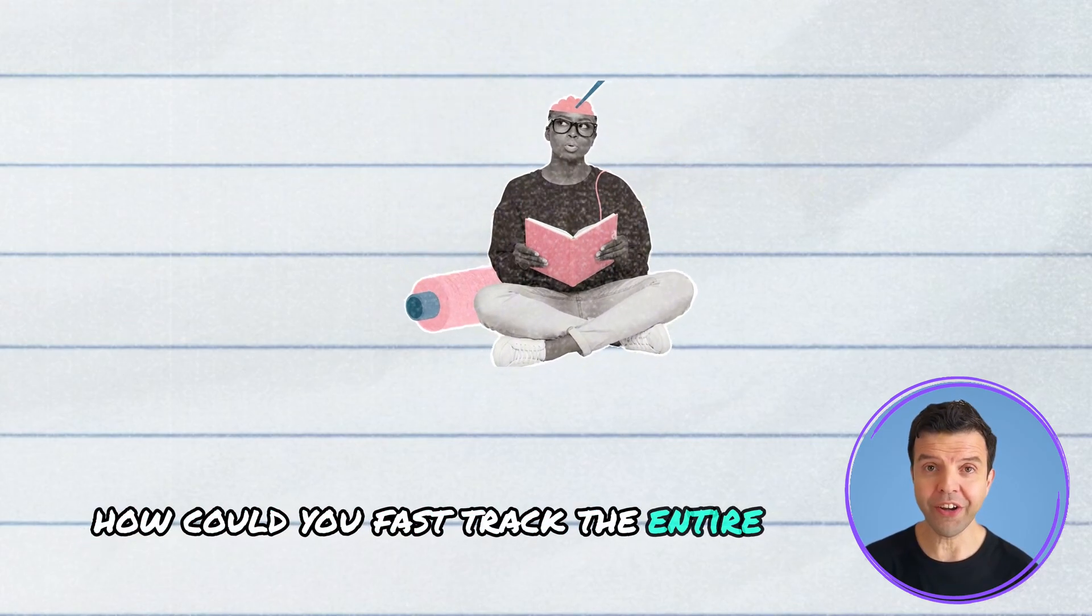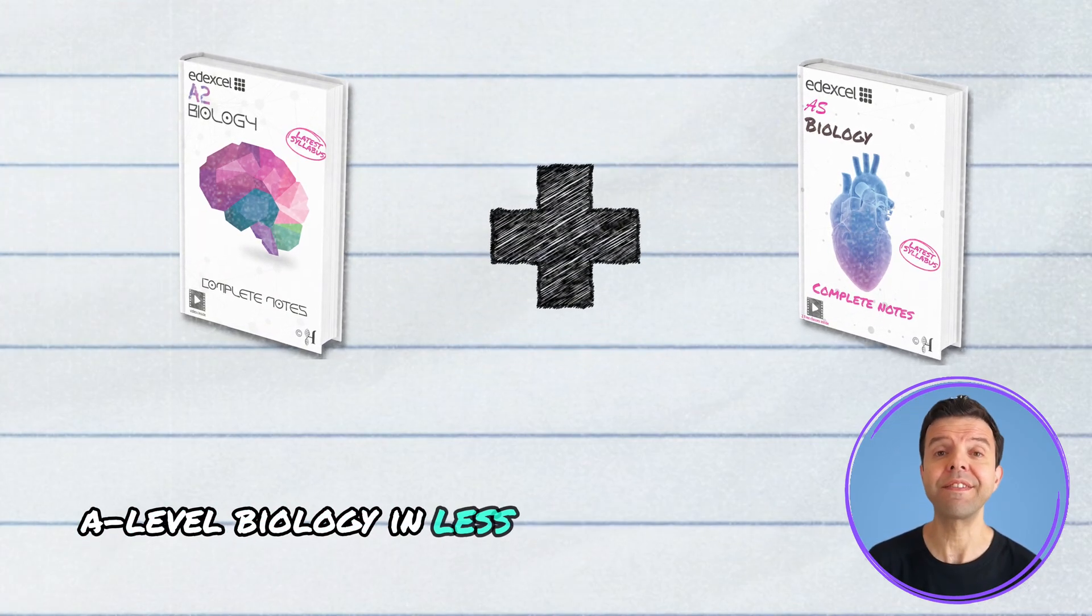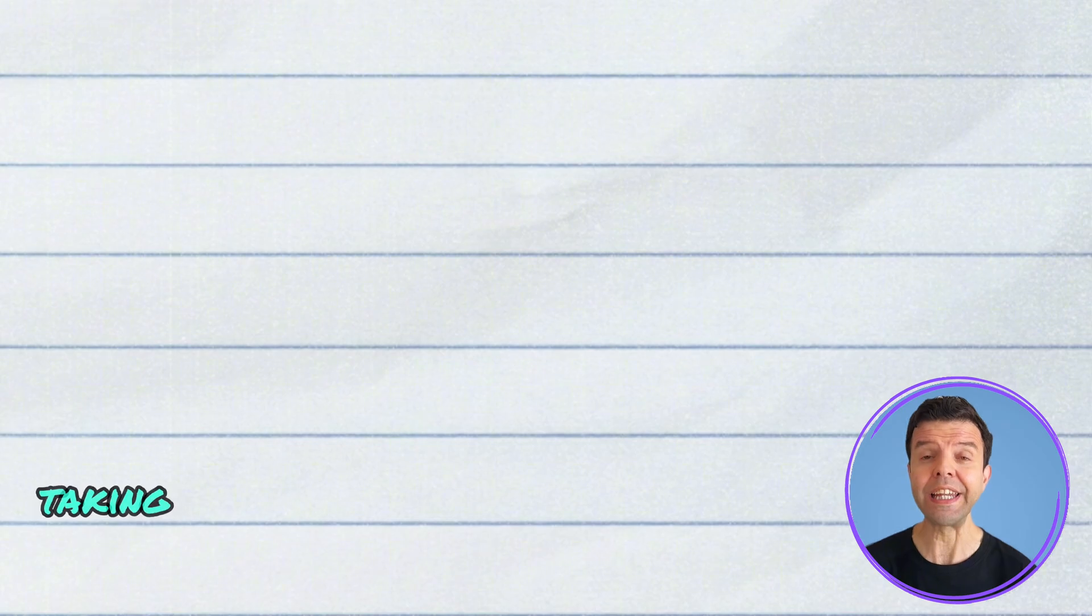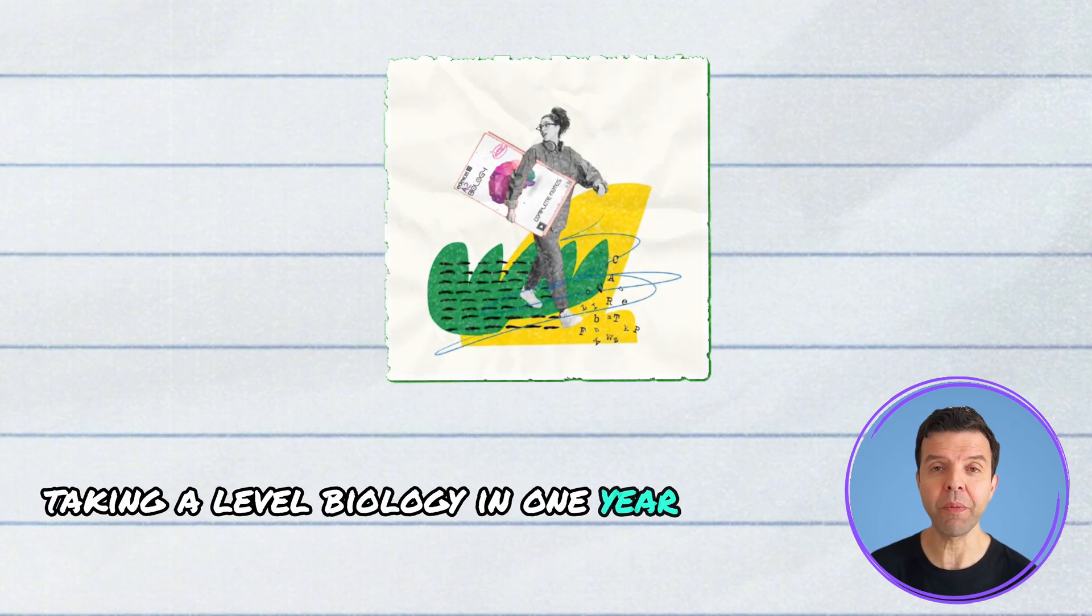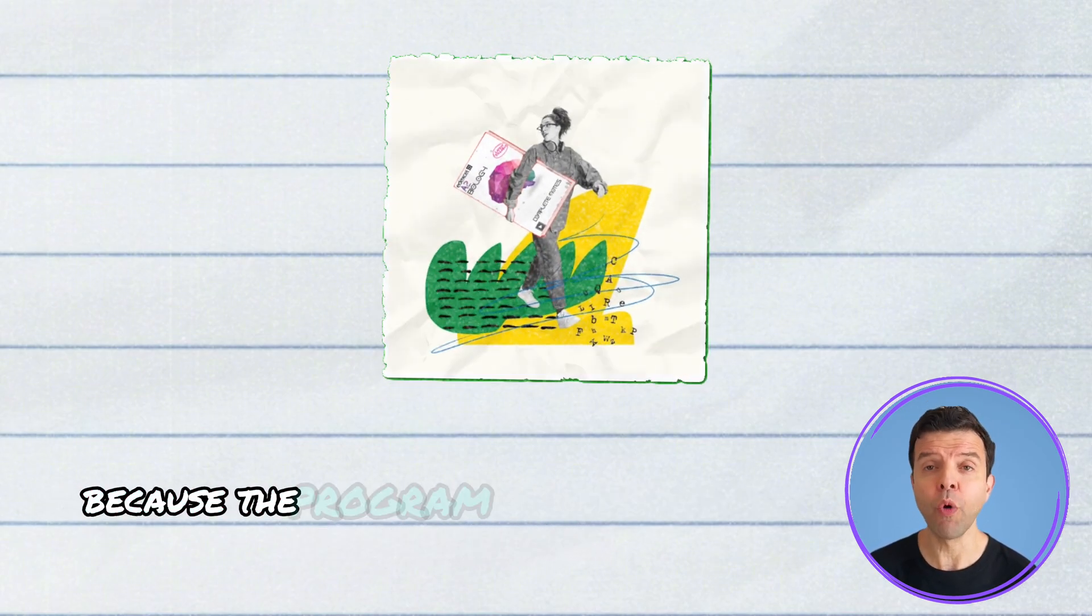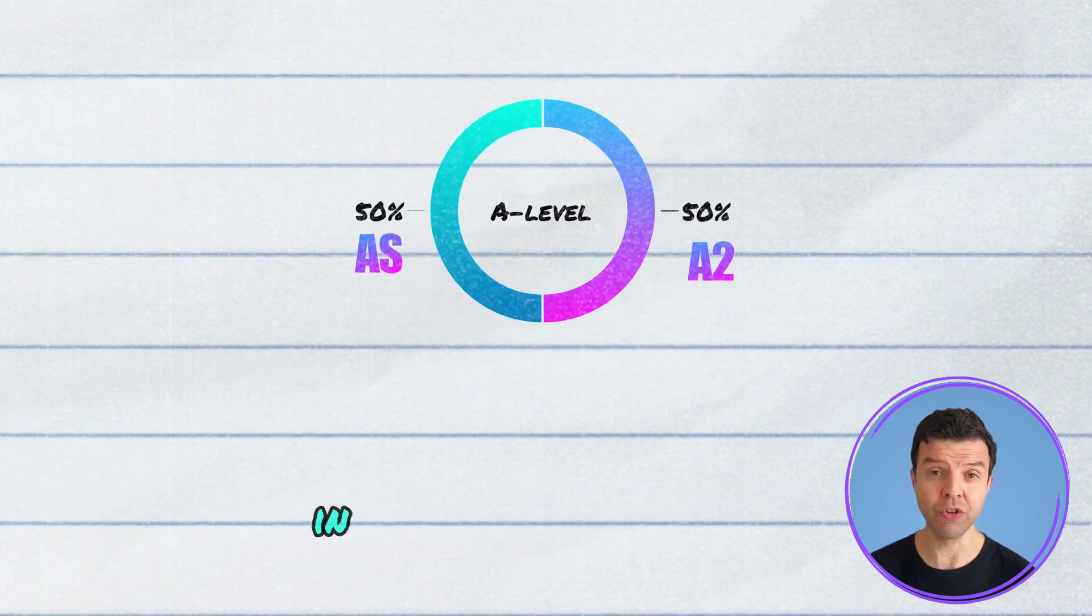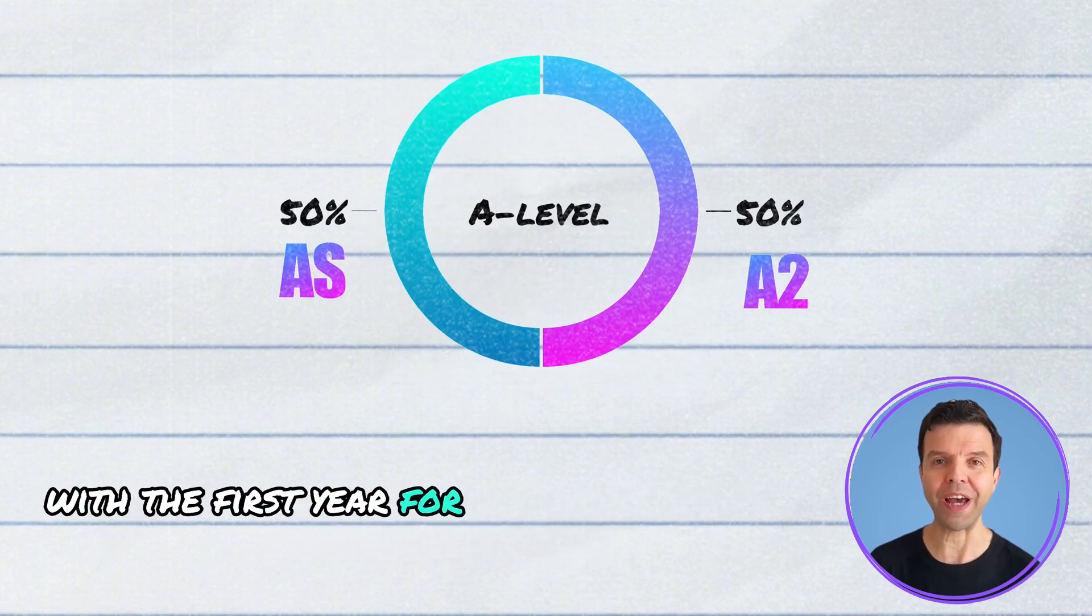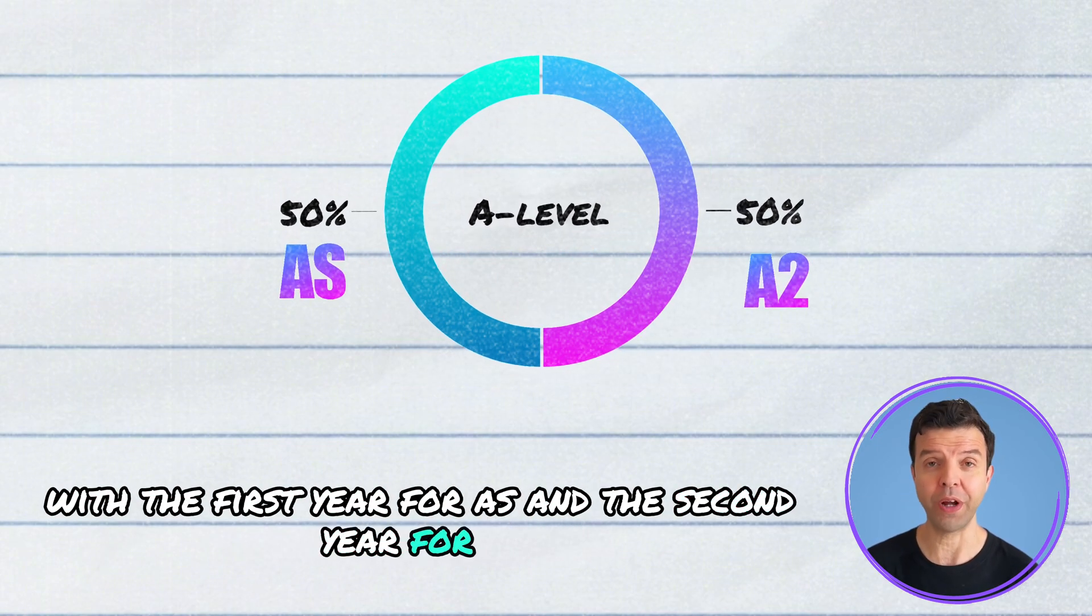How could you fast-track the entire A-level biology in less than one year? Taking A-level biology in one year might be challenging because the program was originally designed to be done in two years, with the first year for AS and the second year for A2.